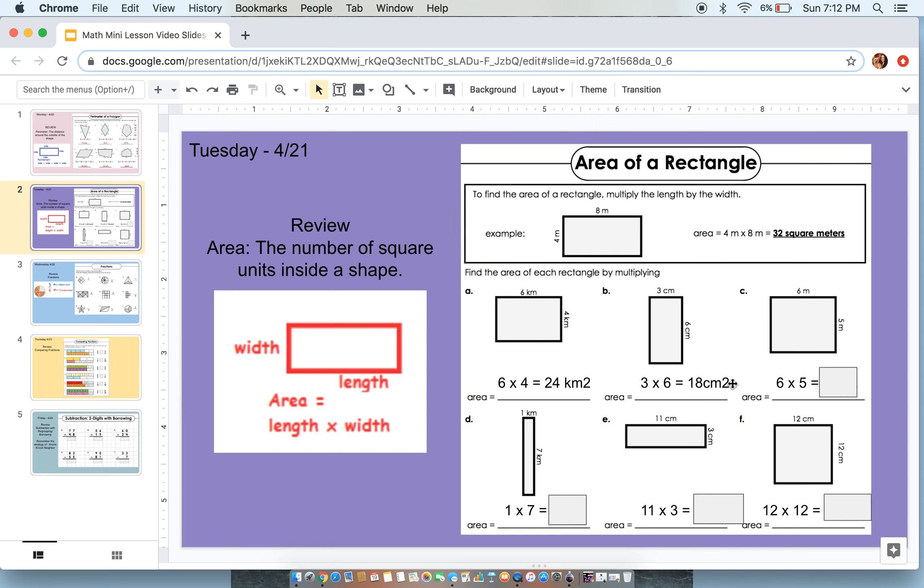So remember, area is a bit simpler with the equations that we need to do in order to solve it. Let's move on to C. So our length is 6 and our width is 5. 6 times 5 is 30. 30 meters squared.